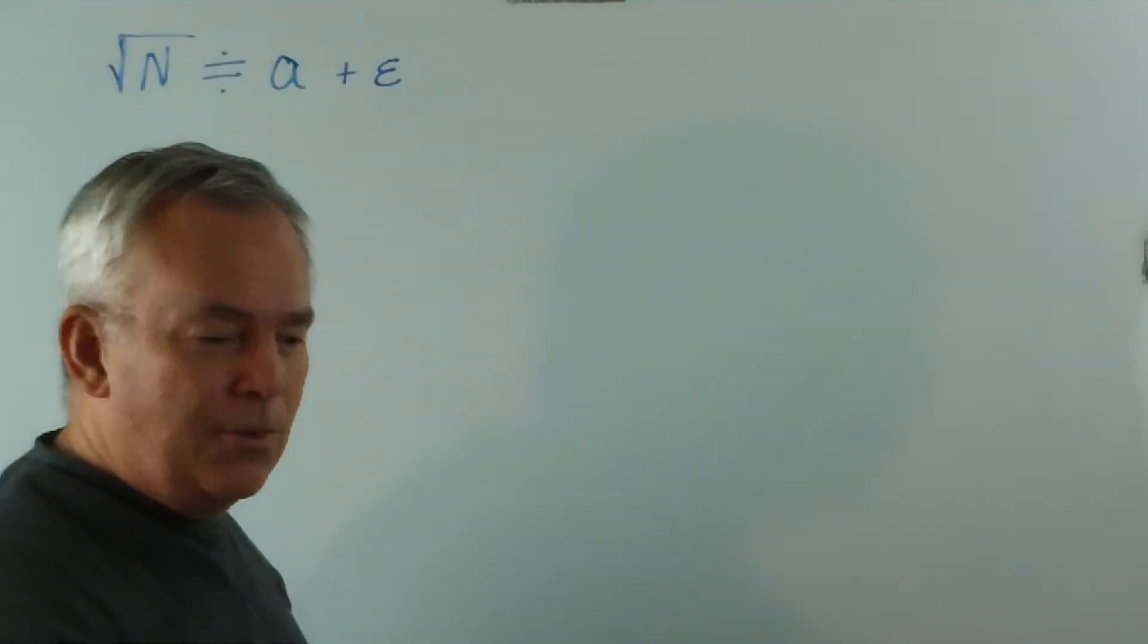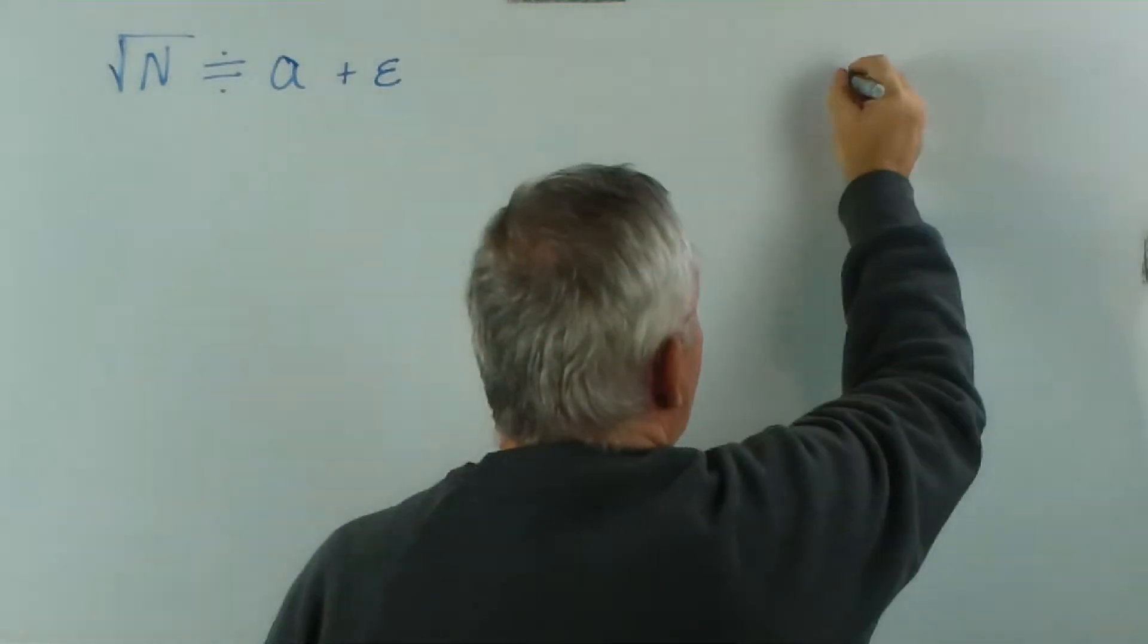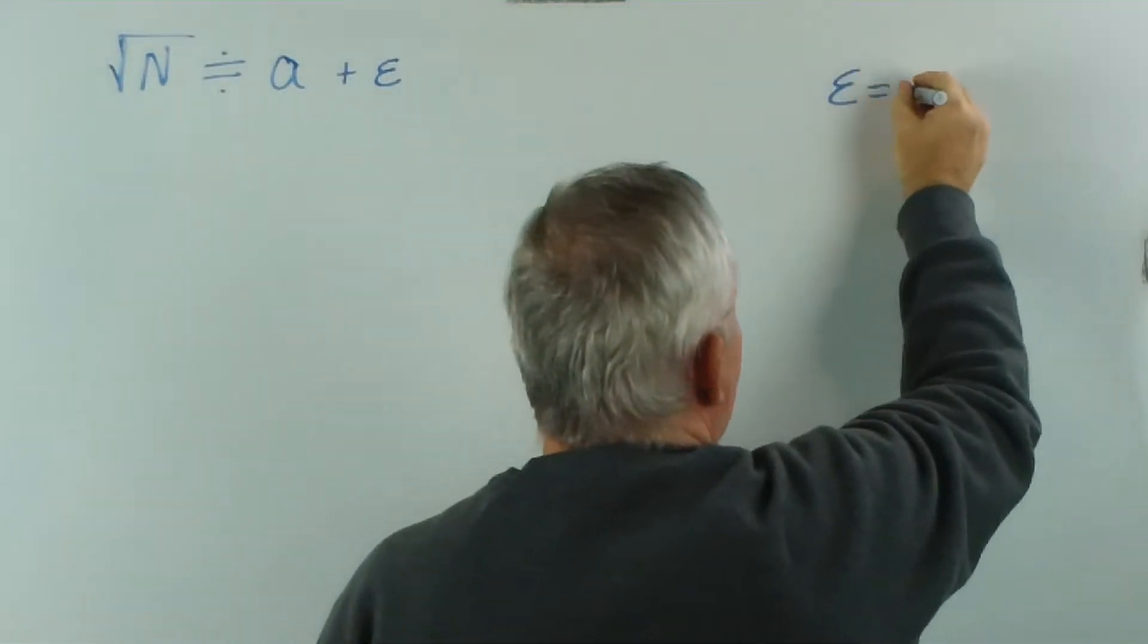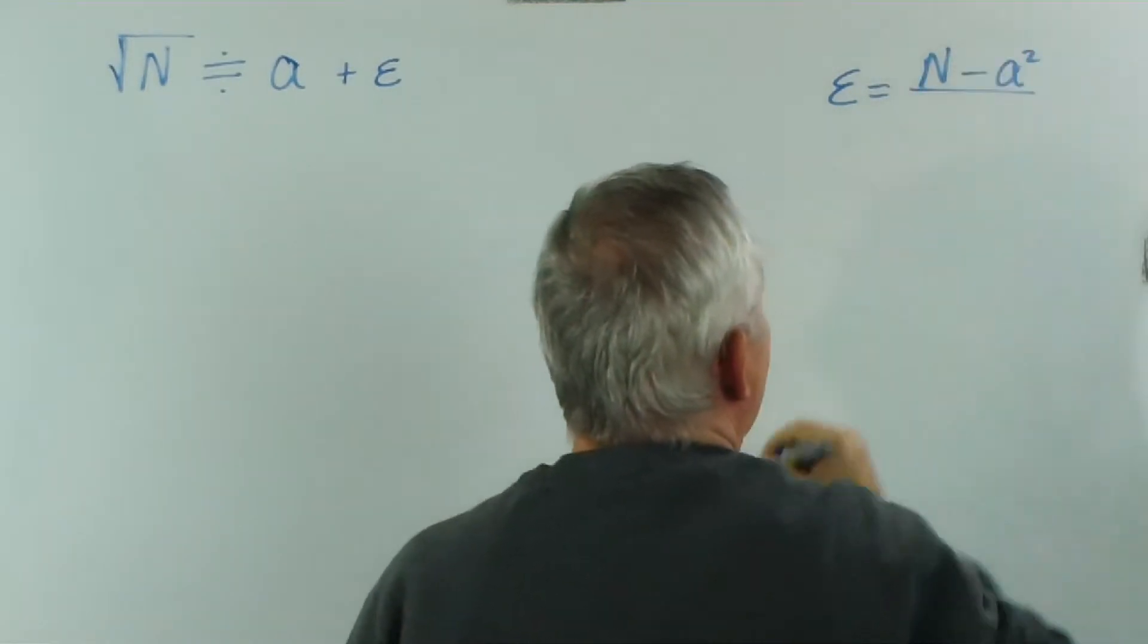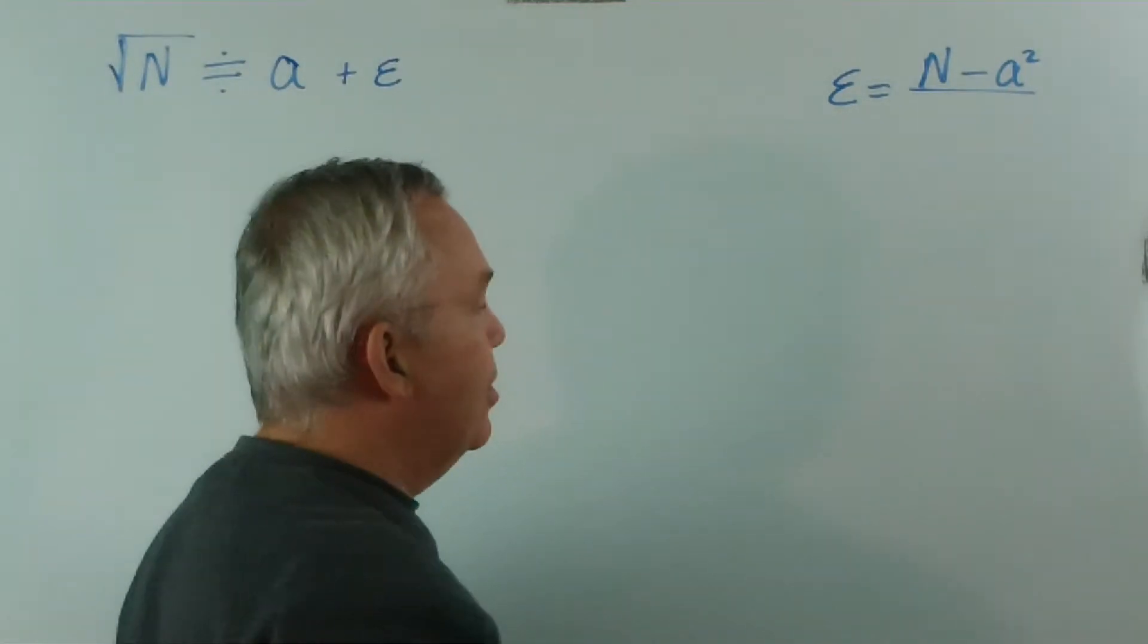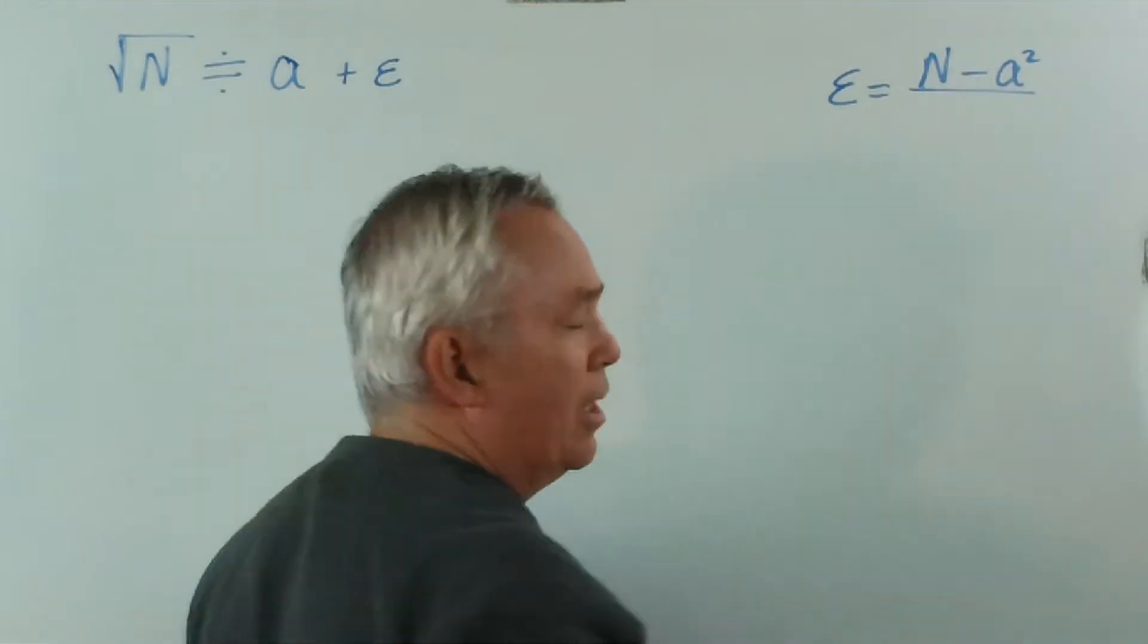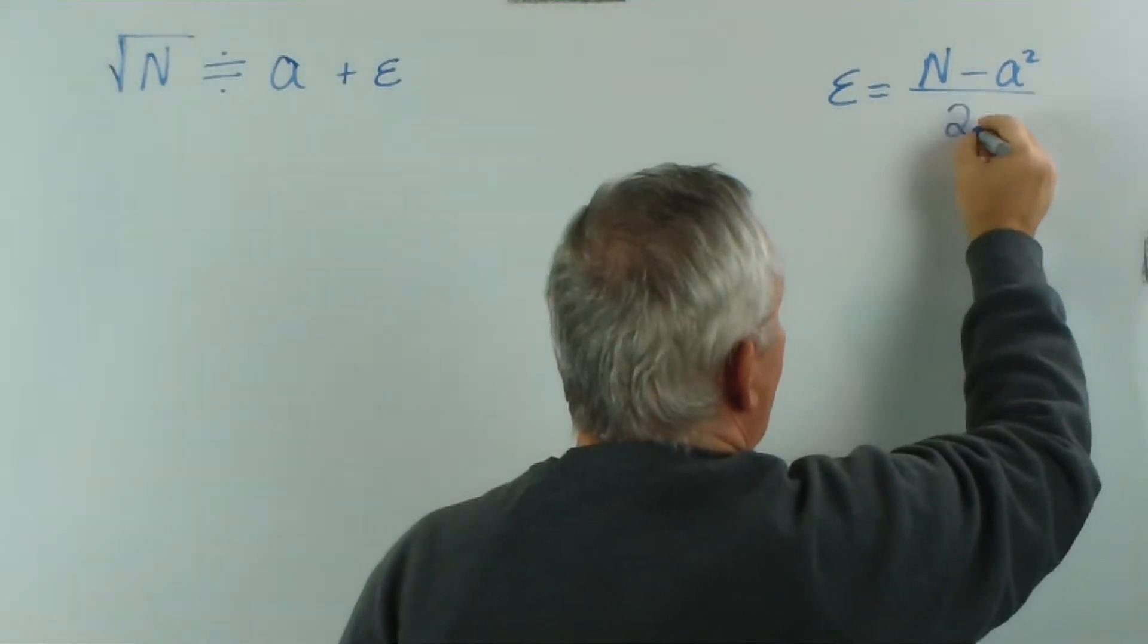Epsilon is a Greek letter that's often used for a small value. And for a square root, this is what epsilon looks like. It has this structure: it's N minus a squared, because a is a good estimate of the square root, and of course we hope that is as close to zero as we can possibly get it. And we divide it by 2a.